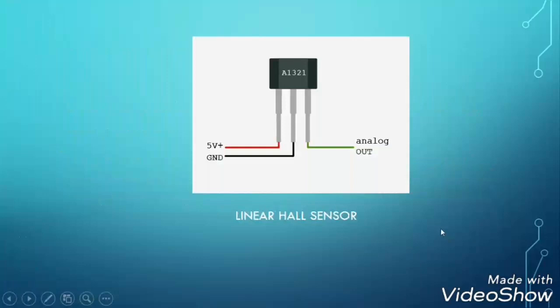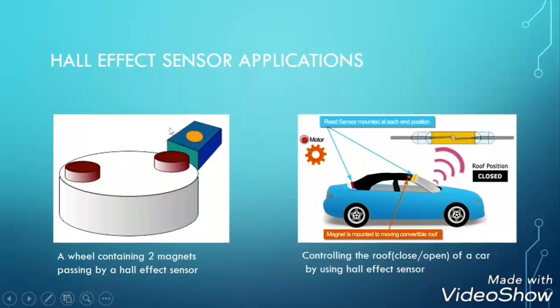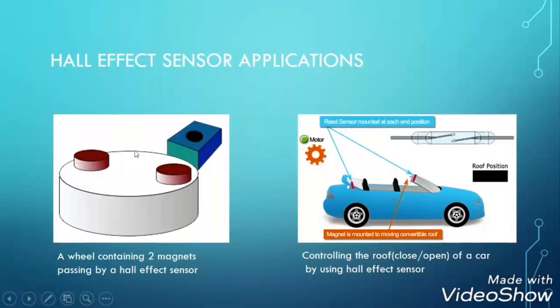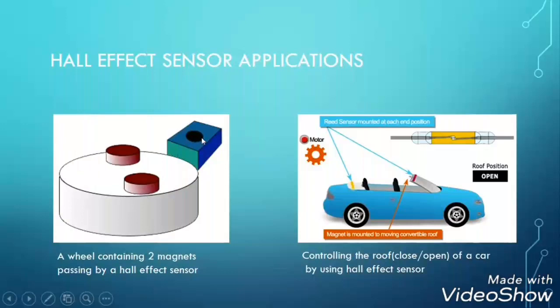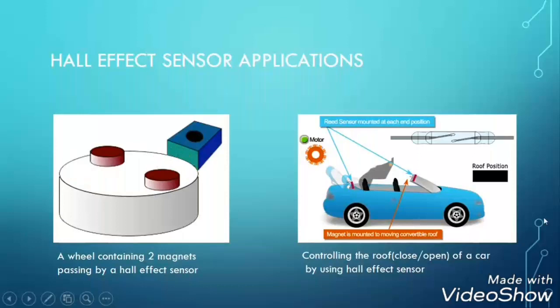This is the linear Hall sensor. The linear Hall sensor is placed between the north and the south poles. These are Hall effect sensor applications. This shows a wheel containing two magnets and a Hall effect sensor. By passing the magnetic field through the Hall effect sensor, we can measure the speed of the wheel.